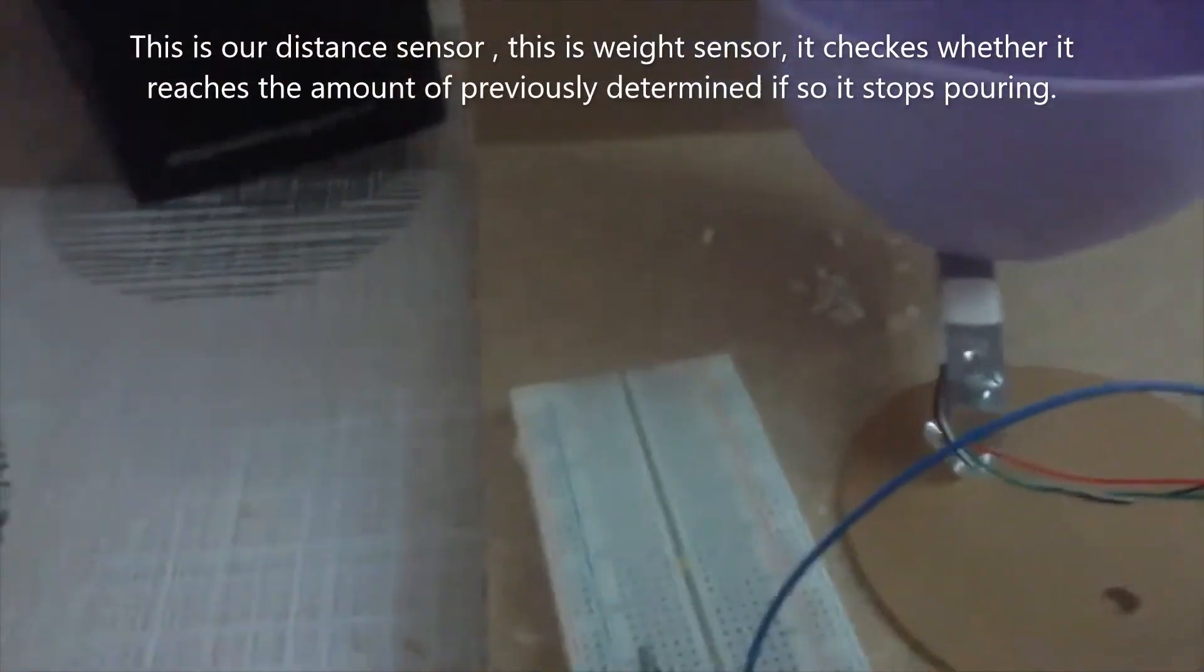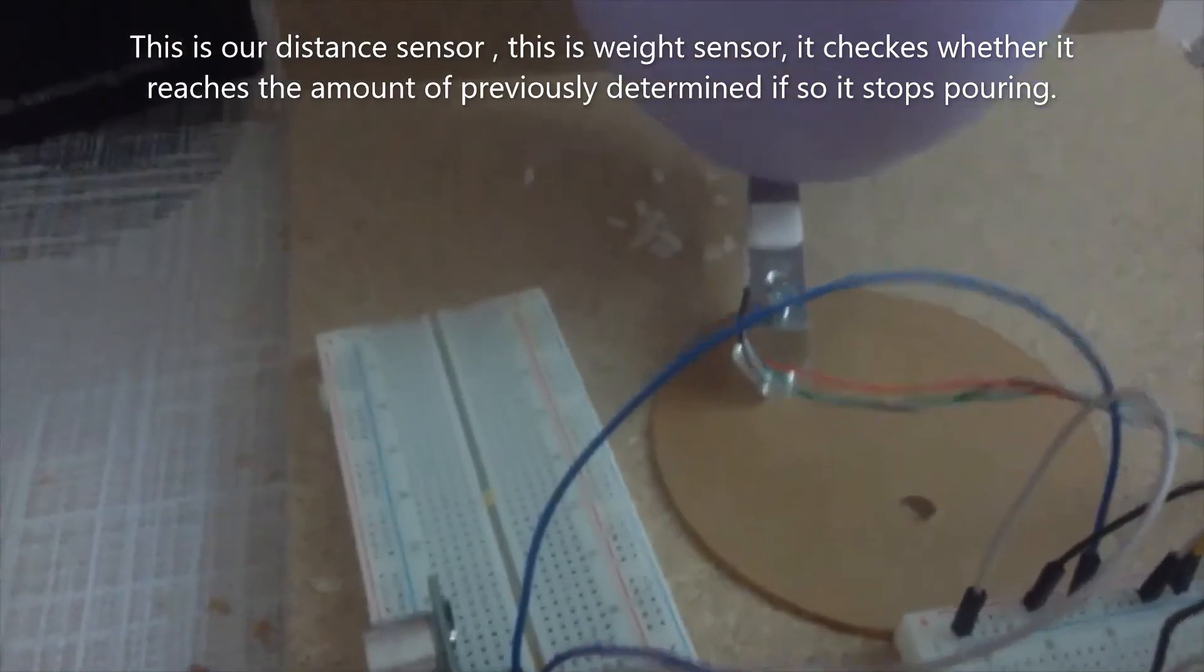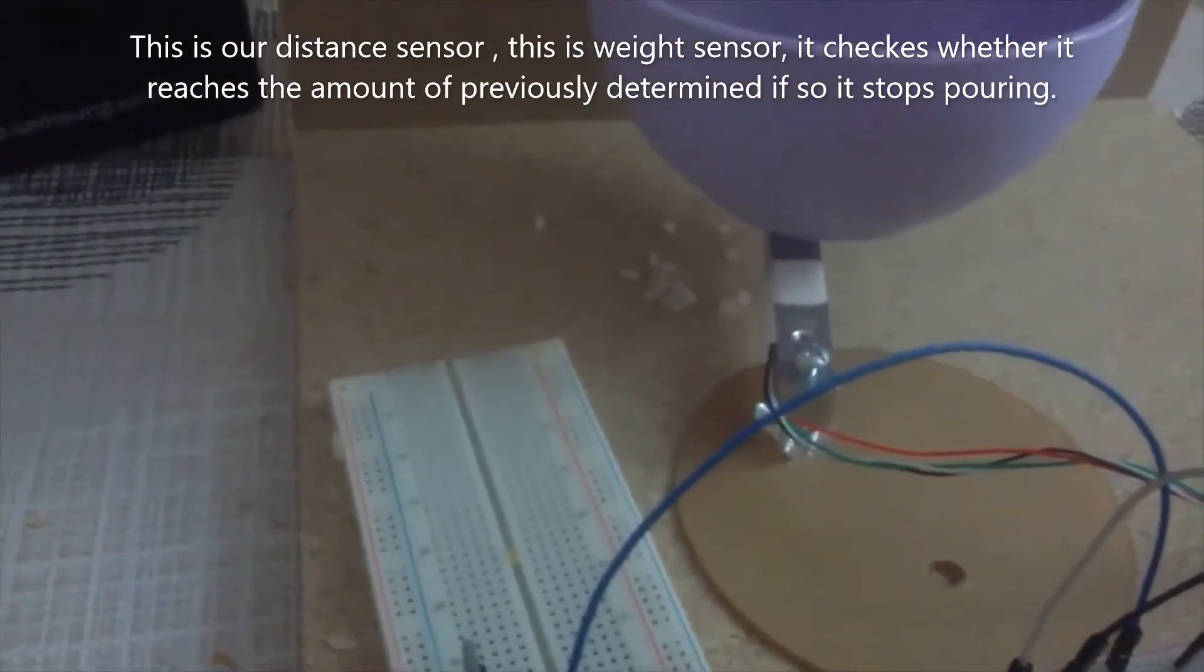This is our distance sensor, this is our weight sensor. It checks whether it reaches the previously determined amount. If so, it stops pouring.